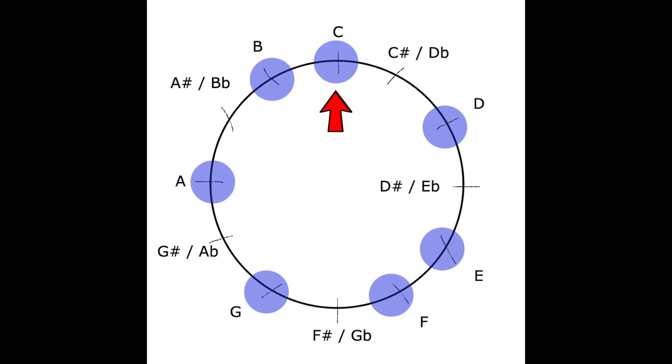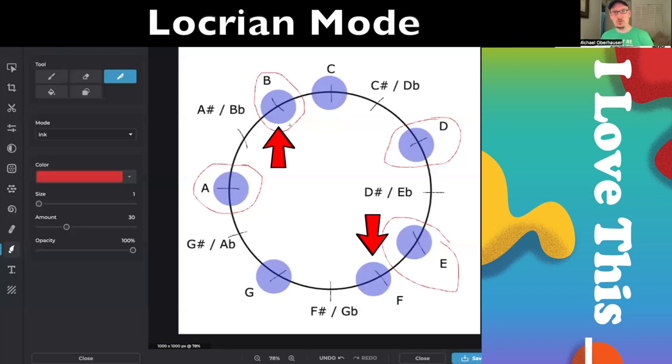But what's different about the Locrian mode? Two things are different. The second scale degree is lowered, like in the Phrygian mode. But the more shocking, I guess, difference is the fifth scale degree is a tritone. It's also lowered. In B minor, we would normally have B, C sharp, D, E, F sharp, G, A, B. But Locrian instead, we've got that tritone between one and five, which makes it feel very unstable.